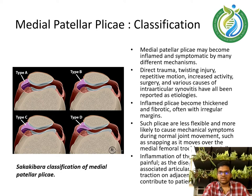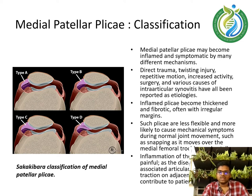Medial patellar plicae may become inflamed and symptomatic by many different mechanisms. Direct trauma, twisting injury, repetitive motion, increased activity, surgery, and various causes of intra-articular synovitis have all been reported as etiologies. Inflamed plicae become thickened and fibrotic, often with irregular margins. Such plicae are less flexible and more likely to cause mechanical symptoms such as snapping as they move over the medial femoral condyle and patella. Inflammation of the plicae may be painful, and associated articular cartilage loss and traction on adjacent synovium contribute to patient symptoms.